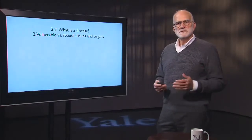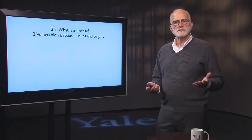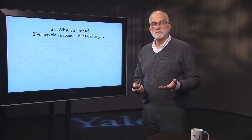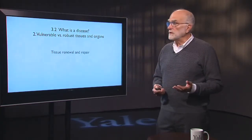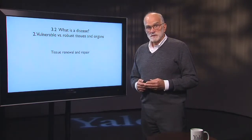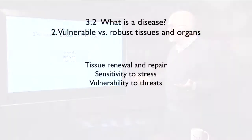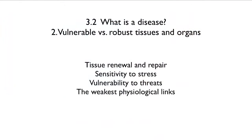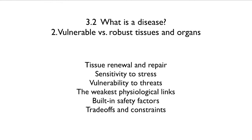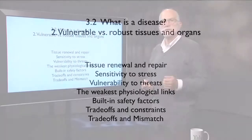When we think about what a disease is, it helps to realize that not all the tissues and organs in the body have the same vulnerability. Some of them are quite robust and others are not. This is a function of tissue renewal and repair, sensitivity to stress, how vulnerable they are to threats, which are the weakest physiological links, and to what degree evolution has built in safety factors. Much of this is governed by trade-offs and constraints — trade-offs are really central to much of this entire argument. And trade-offs are expressed in ways that change when the environment changes, so they interact with mismatches in the environment.